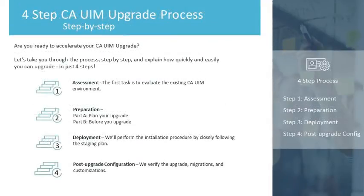We've just taken a look at the four steps that we use in the CA upgrade methodology. So whether you choose to upgrade your environment on your own or use CA, let your CA support representative know that you're starting the process so that we can help you. There might be some FAQs or knowledge-based articles they can direct you to. Watch these videos again and think about the things we've discussed, and apply these same types of methodology and address these same issues in your own upgrade plan.